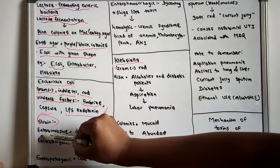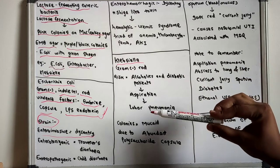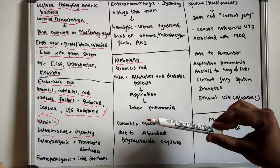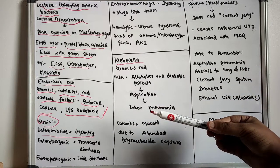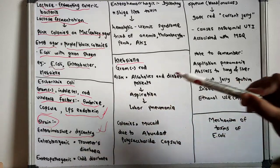The enteroinvasive E. coli mainly causes dysentery. The enteroinvasive E. coli strains invade the intestinal mucosa and cause necrosis and inflammation, thereby causing dysentery.